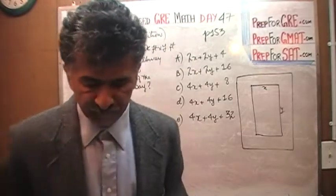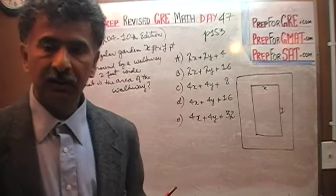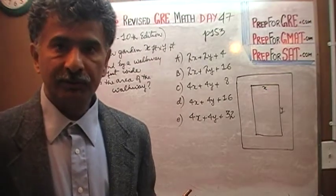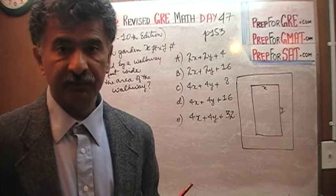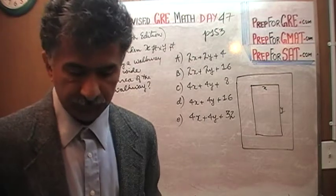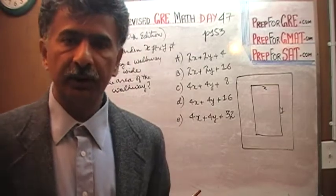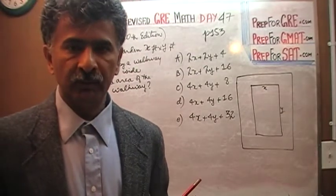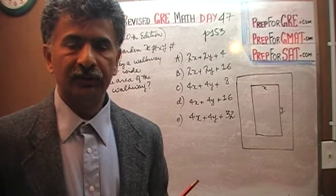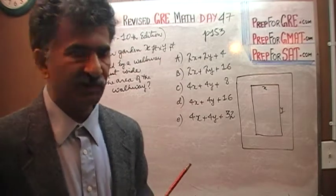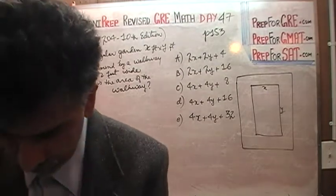Yesterday we did this problem that you see in front of you — problem number 11 — having to do with a garden. We did two problems as a matter of fact. One was the easy question; the one you see in front of you is classified as a medium question. Today we will do a very similar question that appeared in one of the old exams which was considered a hard question, because only 36 percent of people got it right.